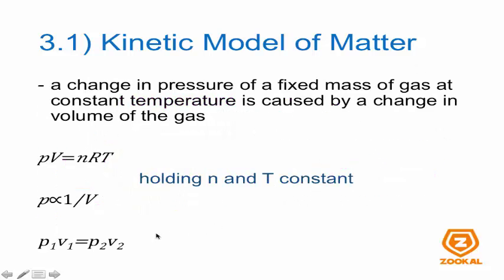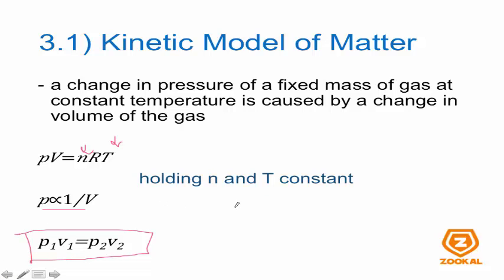Moving on: a change in pressure causes a change in volume of the gas, holding mass and temperature constant. From PV equals nRT — fixed N, fixed T, and R is constant — the whole right-hand side is constant. Using mathematics, you get P is proportional to 1 over V. From this concept, you can derive the important equation P₁V₁ equals P₂V₂.